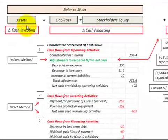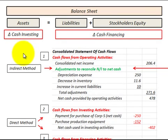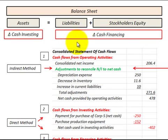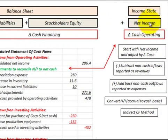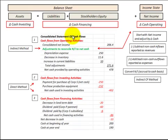Our cash for investing activities is generally found in the assets section — investing in property, plant, and equipment. Our cash for financing activities has to do with stockholders' equity, issuing stocks, and also liabilities where we're issuing bonds and debt securities. Moving over to net income, that's our cash for operating activities, and that's part of the income statement. Those are how our consolidated statement of cash flows relates to the balance sheet and the income statement.